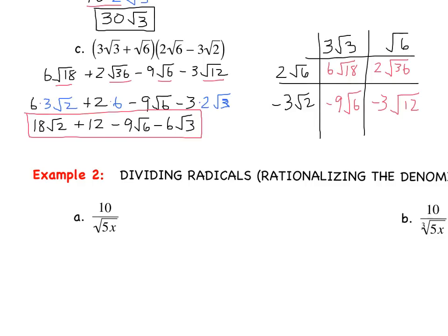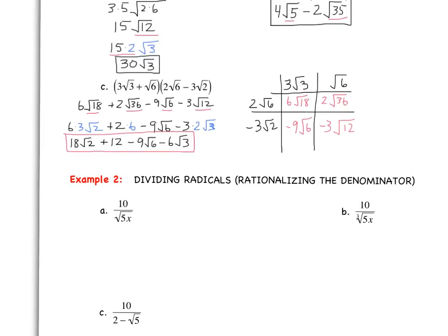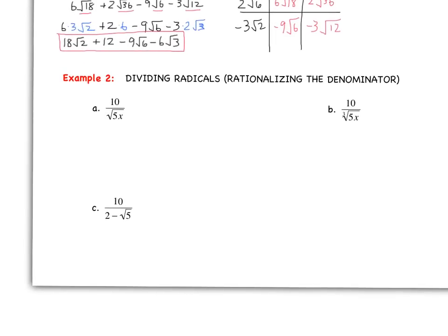Finally, we're going to get into a newer topic you may have seen in geometry: dividing radicals, which means we're going to be rationalizing the denominator. If you haven't heard this term before, it simply means get rid of any radicals in our denominator. If we take a look at 10 divided by the square root of 5x, the goal is to get rid of the square root of 5x by multiplying by something so the radical goes away.